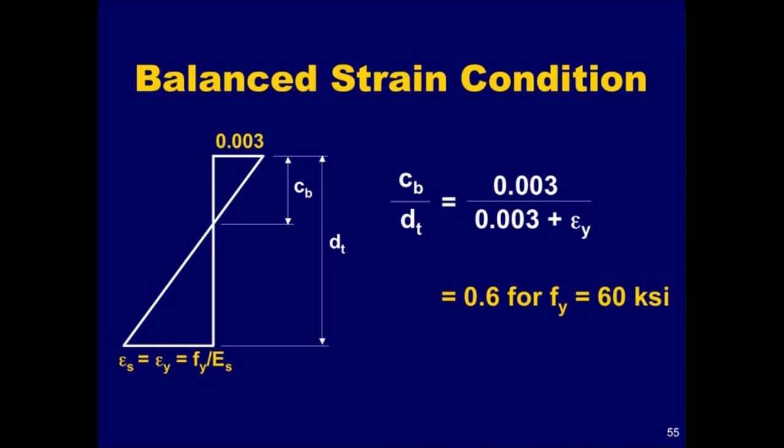For grade 60 reinforcement, section 10.3.3 permits the yield strain of the reinforcement to be taken as 0.002, as opposed to 0.00207, which would be obtained by dividing the yield stress of 60 KSI by the modulus of elasticity of 29,000 KSI. Substituting 0.002 into this equation gives the ratio C sub B to D sub T as equal to 0.6. Note that this value applies to all sections with grade 60 reinforcement, and not just to rectangular sections.